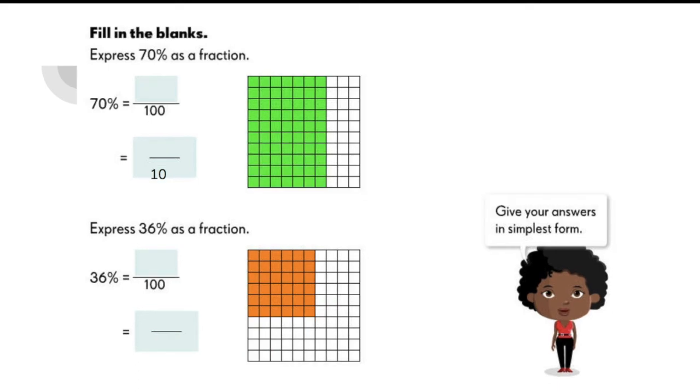What about this one? Do you know how to express this in fraction? 70% is equal to 70 over 100, which is also equal to 7 tenths.